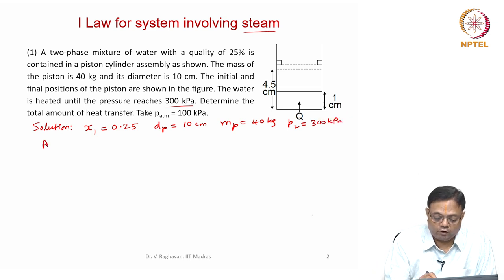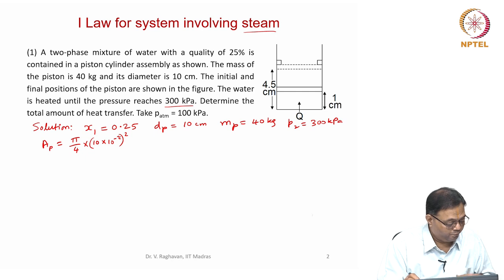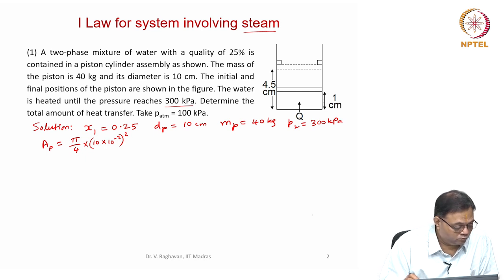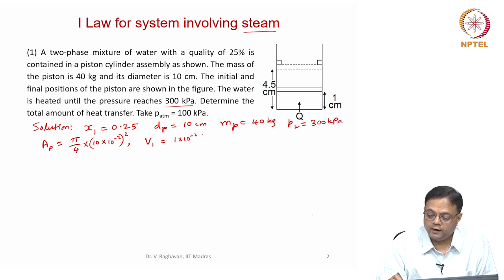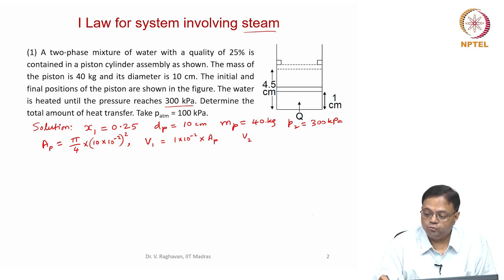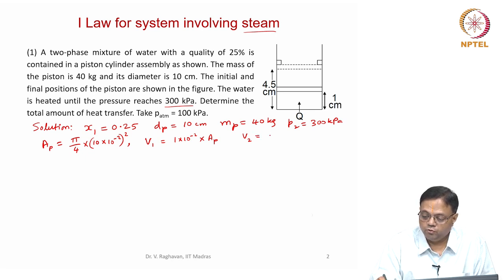The area of cross-section of the piston will be equal to π/4 into (10 × 10⁻²)² to convert centimeters to meters squared. Volume V1 will be equal to the height of 1 centimeter multiplied by the area. Similarly, V2 when the piston touches the stops will correspond to 4.5 centimeters minus 1 centimeter.